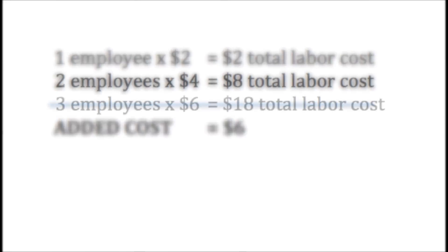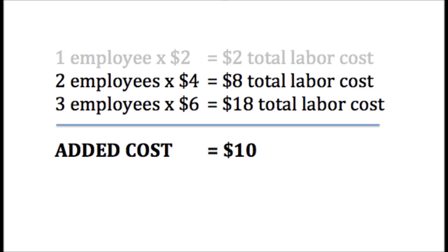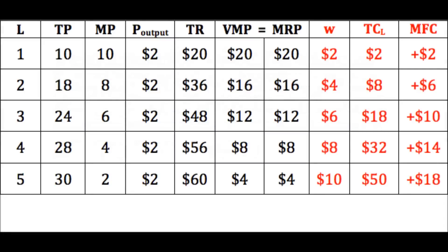To get three workers, the firm will have to offer a wage of $6, raising the total cost of labor to $18. The third worker, therefore, added $10 to the cost. As each new worker is added, you can see that the marginal factor cost of that worker is greater than the wage paid. The added cost is not only the new employee's salary, but also the raises that must be given to all of the existing employees.